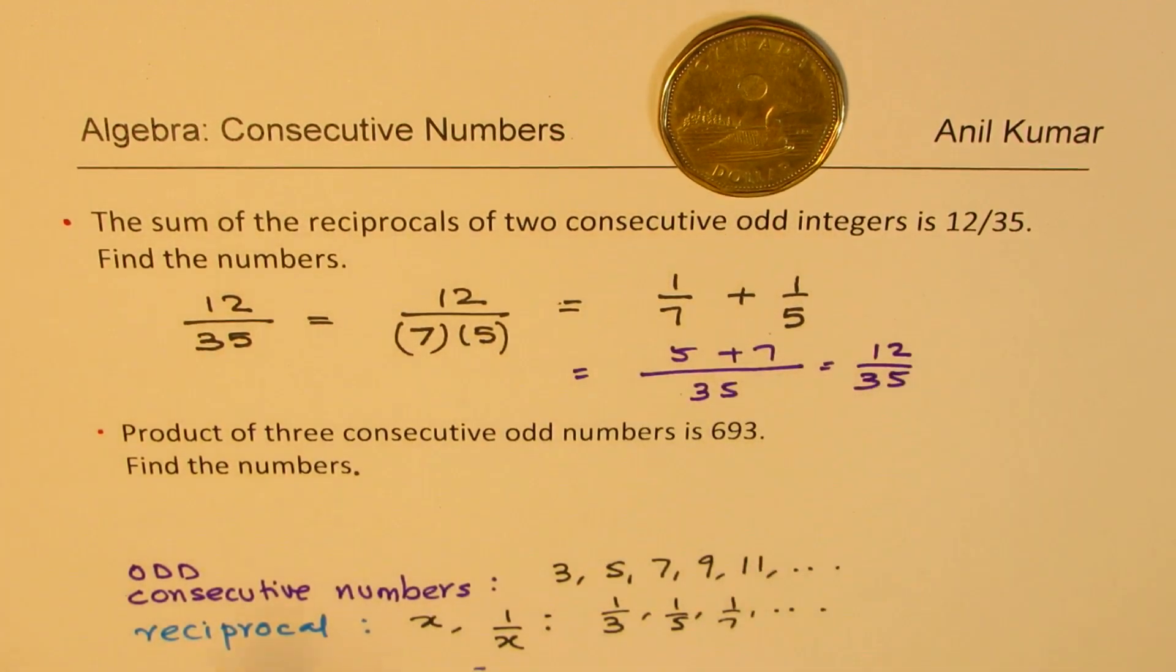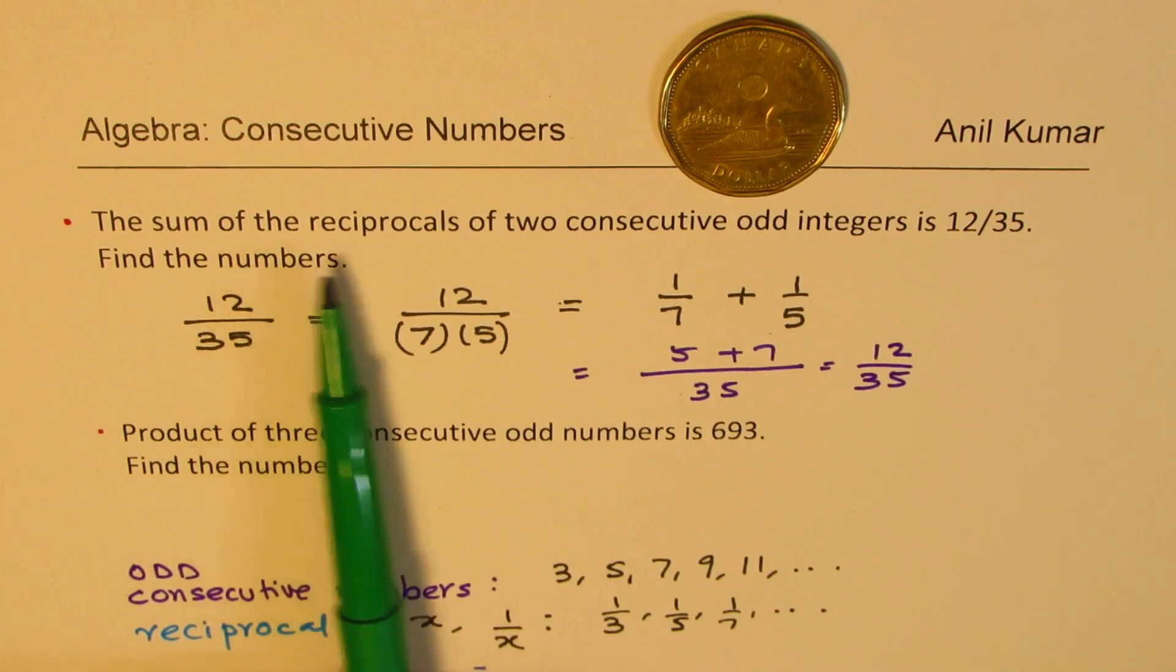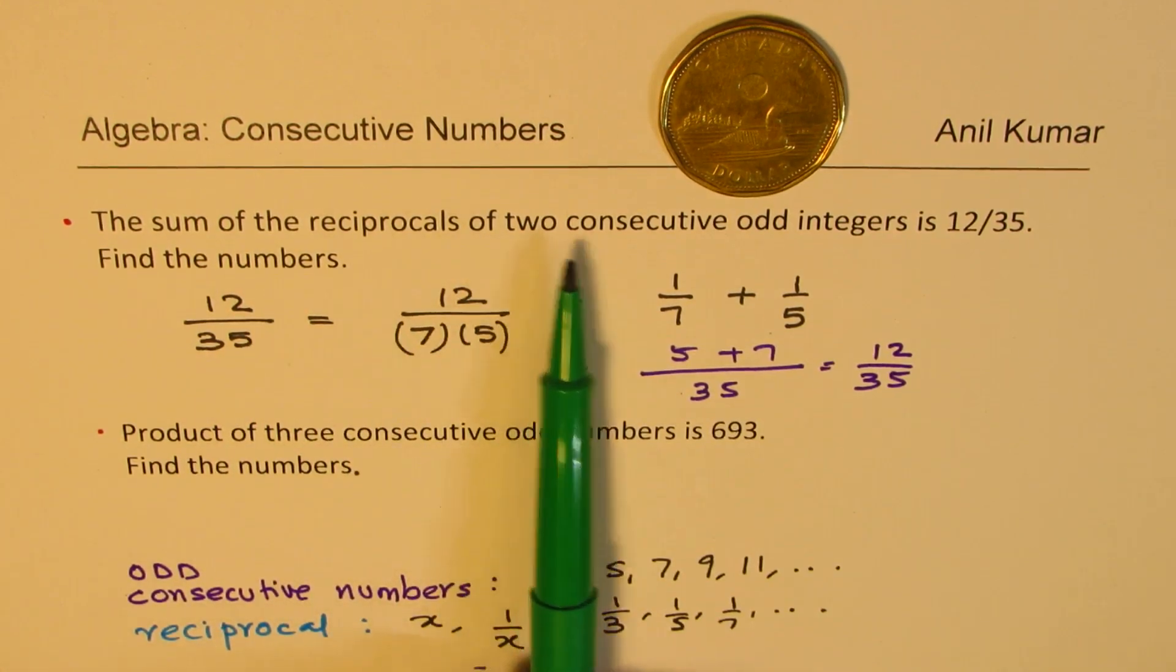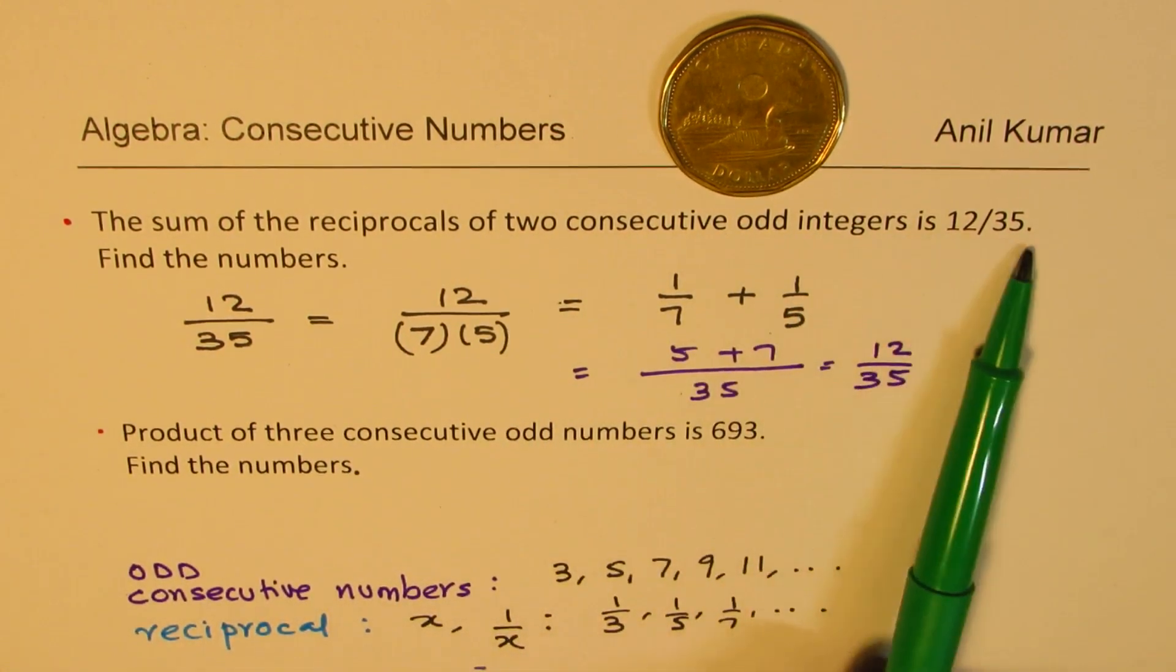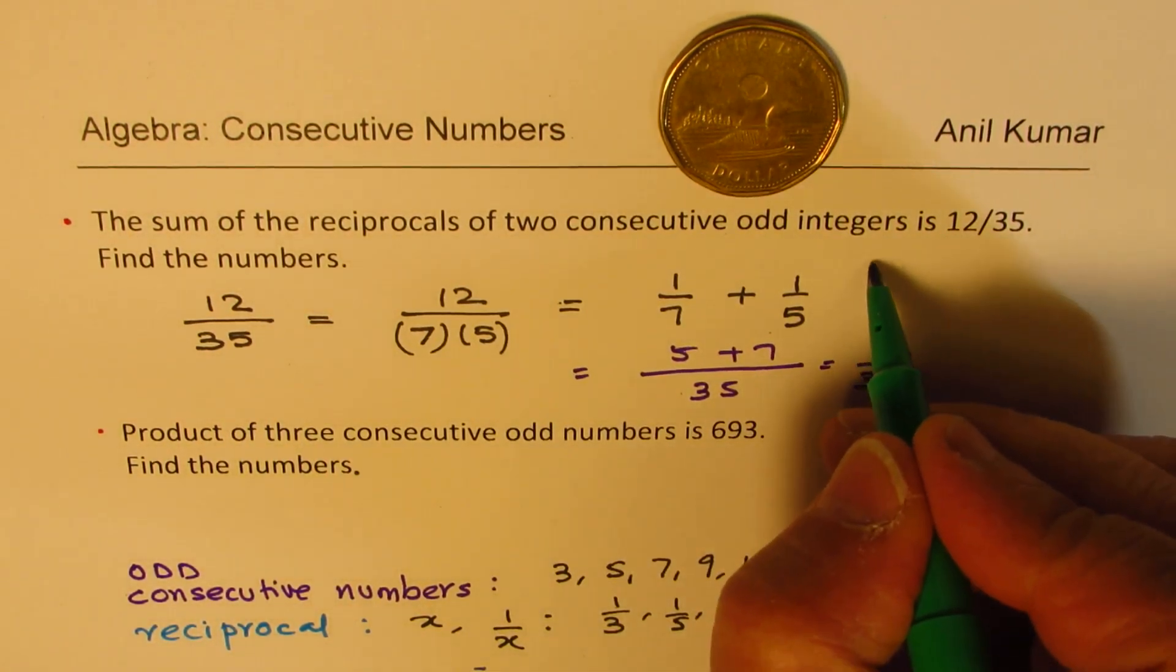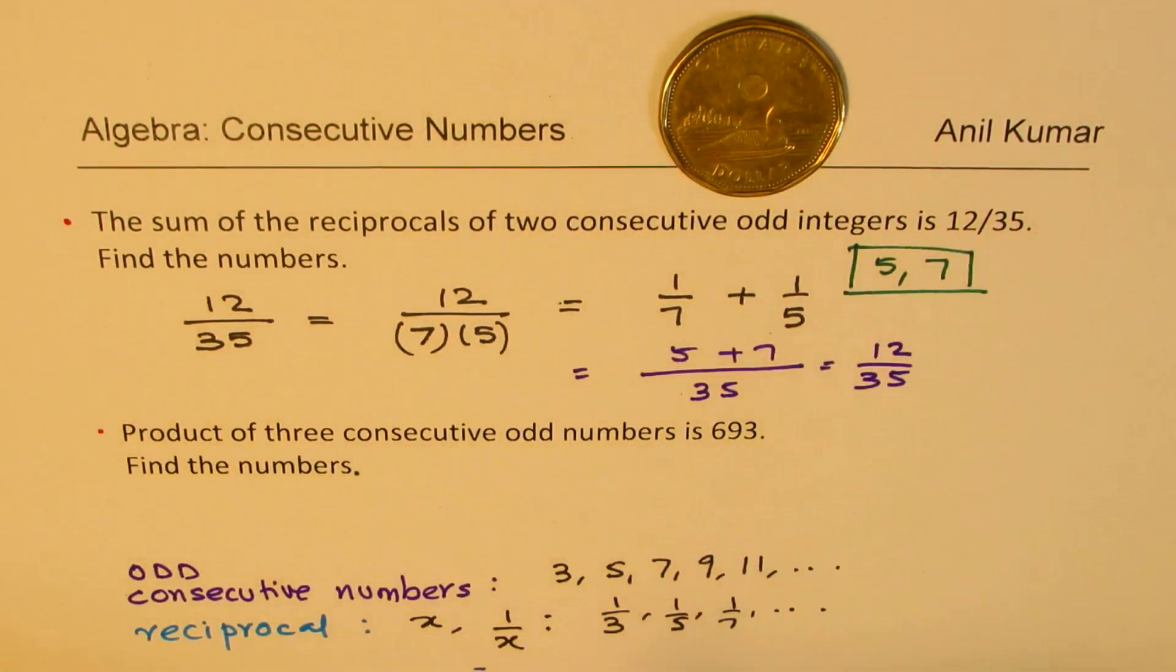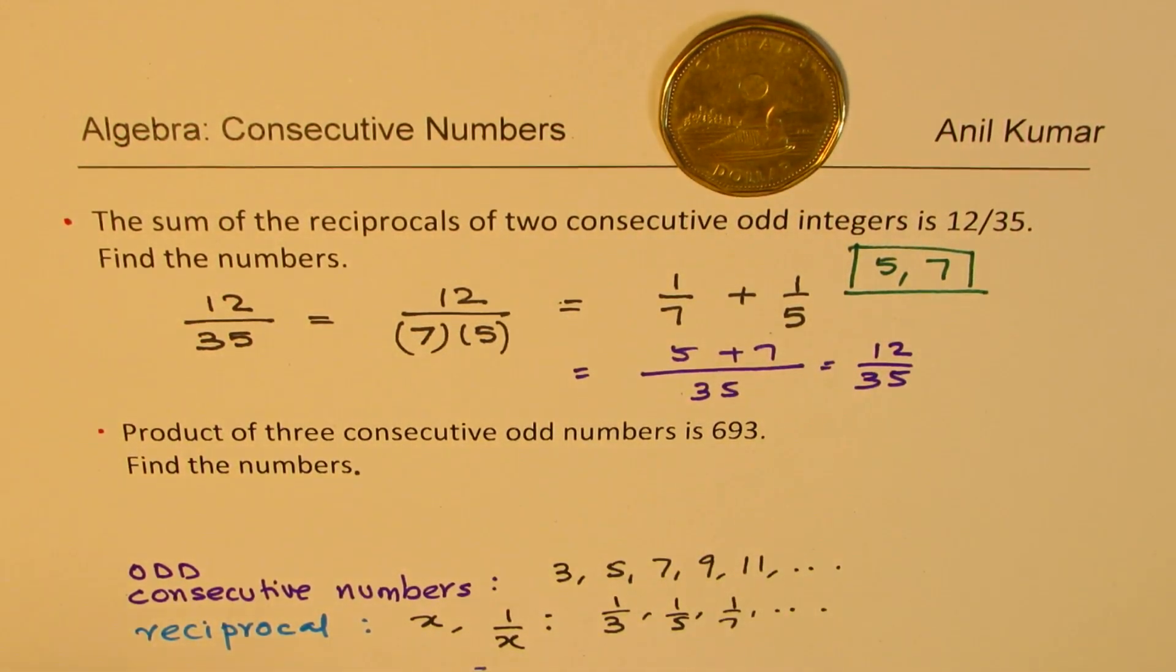And therefore, what is the answer? So we get our answer here and the answer is... the question is the sum of the reciprocals of two consecutive integers is this, find the numbers. We have to provide the numbers. So the numbers are 5 and 7. So that becomes our answer. Is that clear to you? So that is how we are going to do the first question.